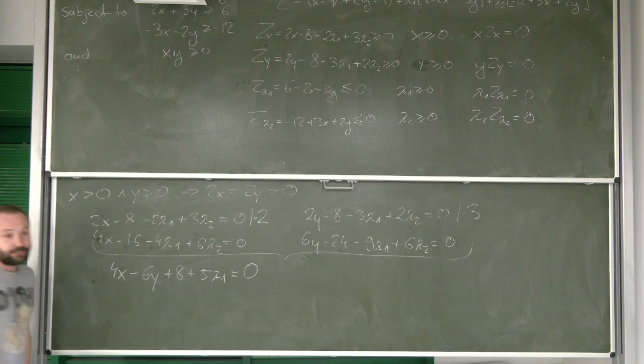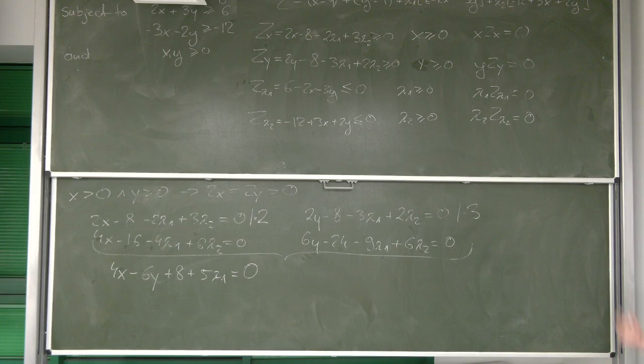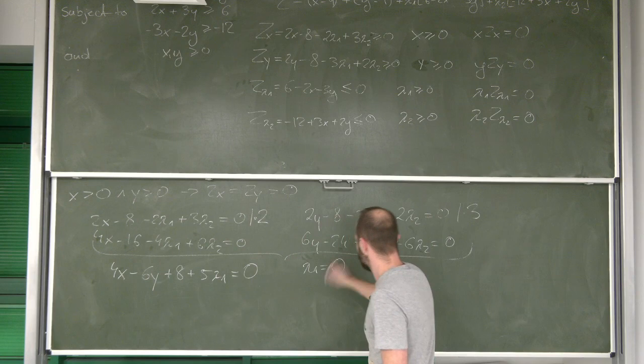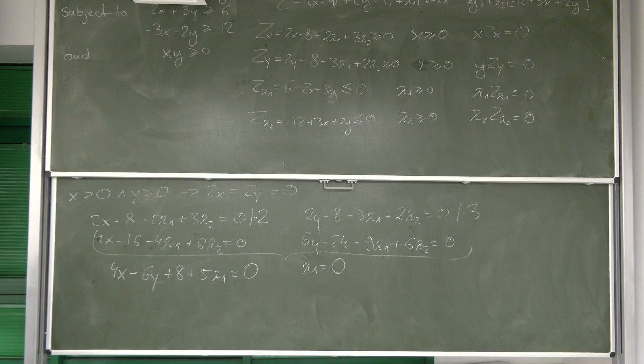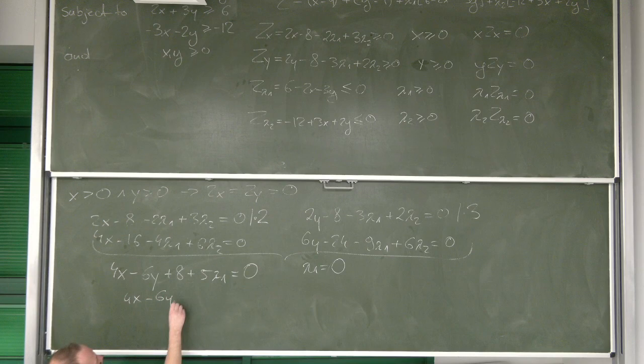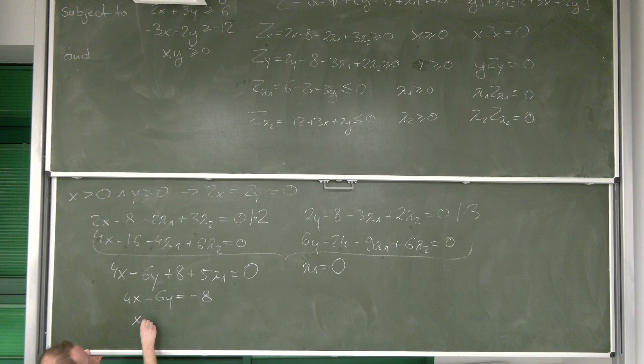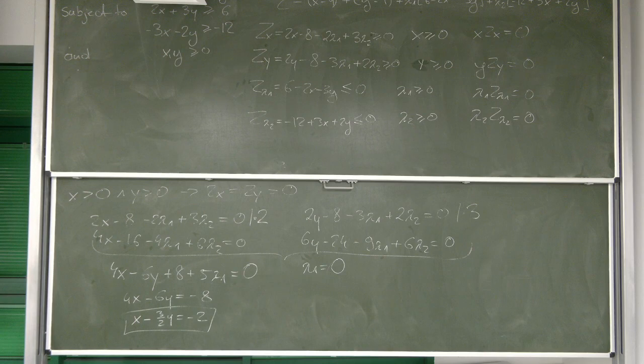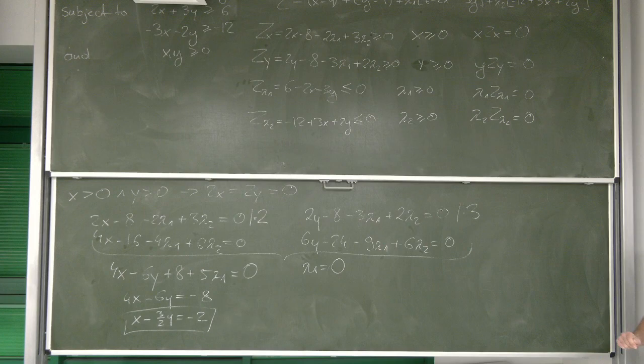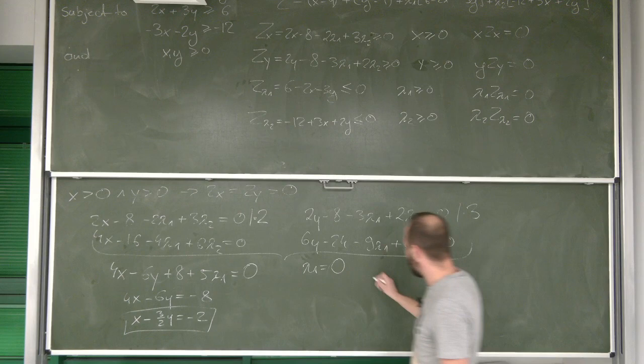So maybe the next thing we could assume, for example, is that lambda 1 is equal to 0. Okay, in this case, this equation loses 5 lambda 1, right? So we get that this is 4x minus 6y equals to negative 8 or x minus 3 over 2y equals to negative 2. Okay, we are getting somewhere. We still have one equation, right? But we need a second one.